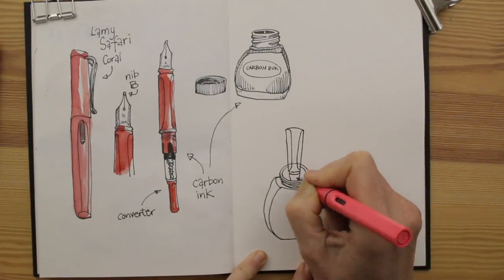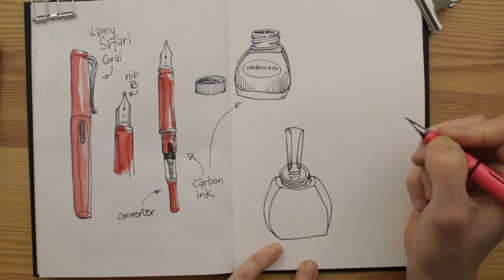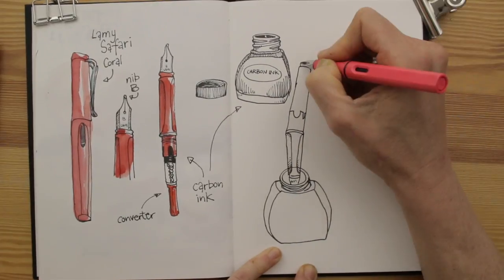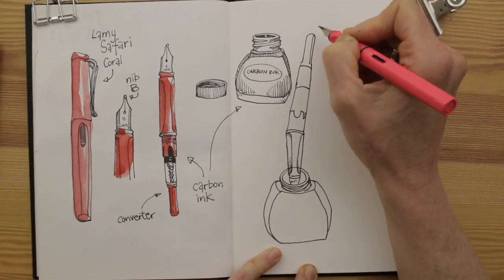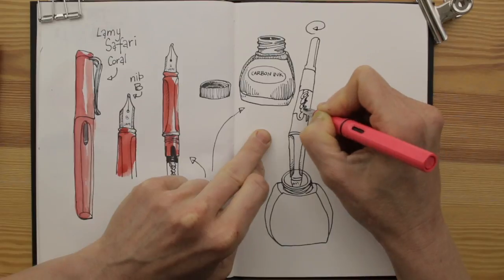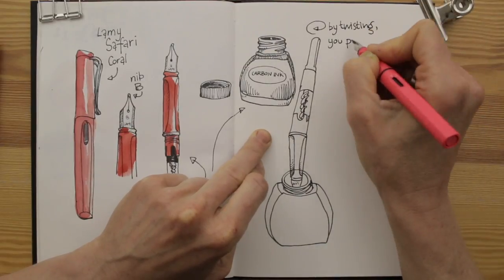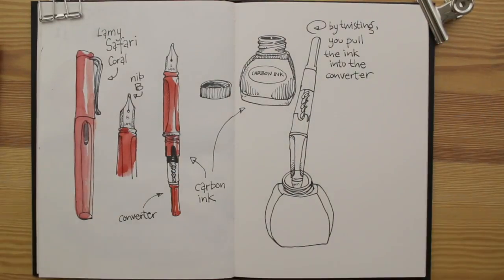To refill the converter, you simply dip the tip of your pen into the ink and twist the converter so it soaks up the ink. Even though I drew the pen crooked here, you'll get the idea, right?